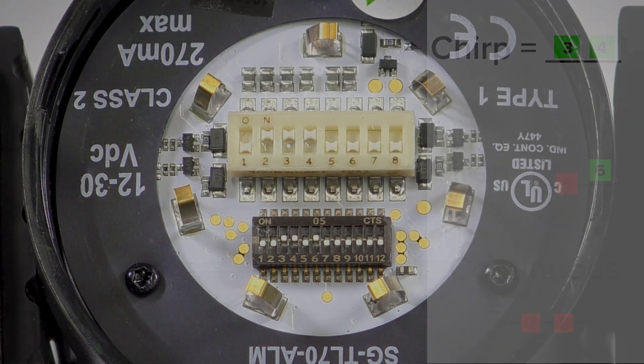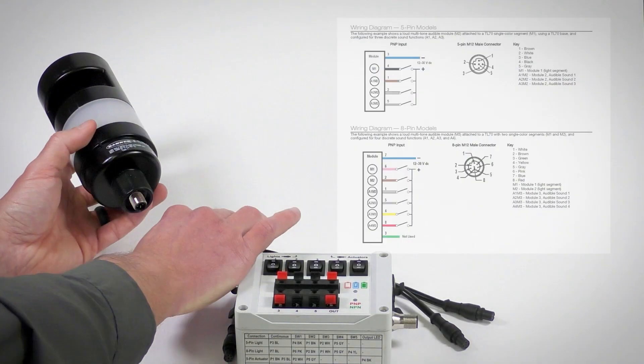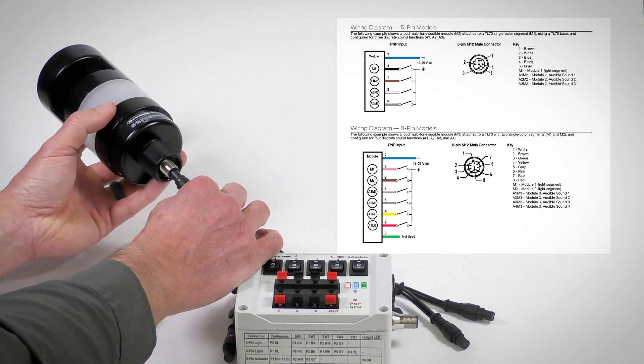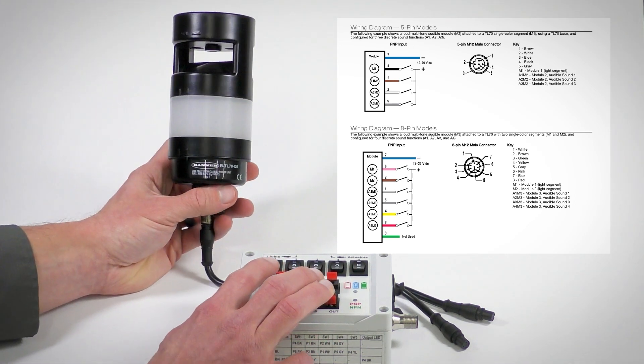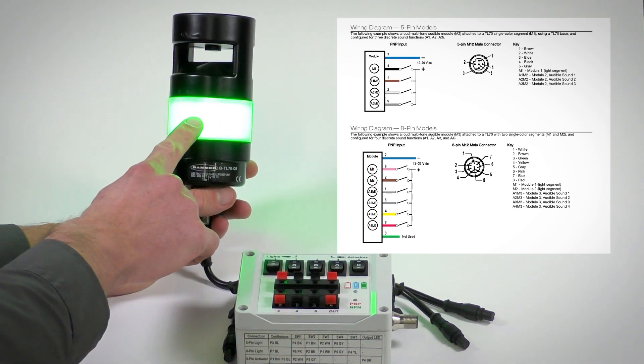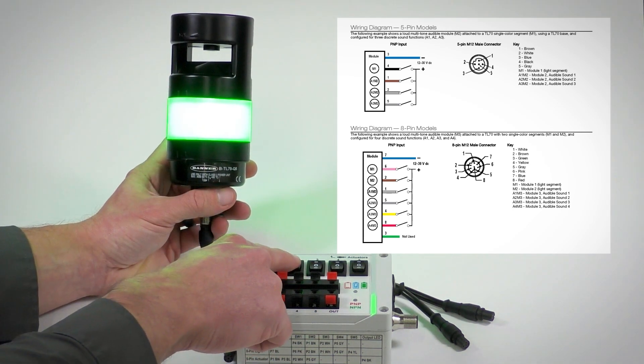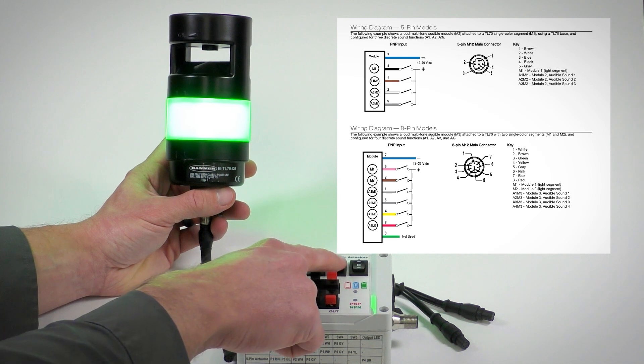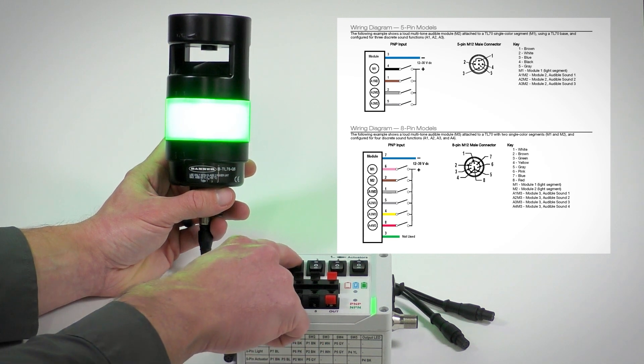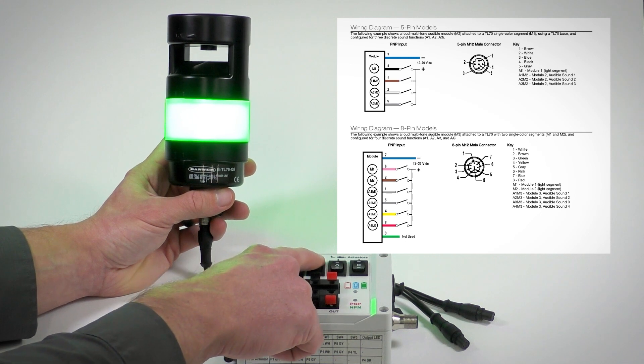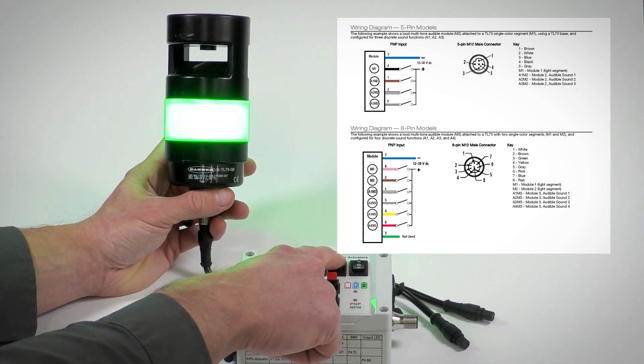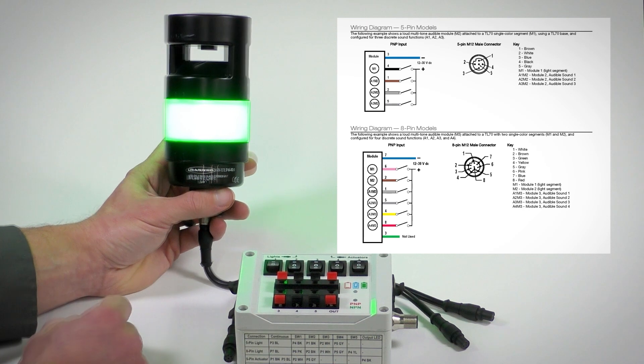So with our switches configured and our audible module attached to the indicator and base, I now have input one tied to my indicator, input two will be my chirp, input three my siren, and input four my continuous. There's my chirp, there's my siren, and there's my continuous alarm.